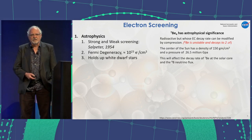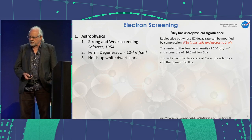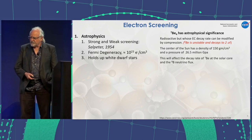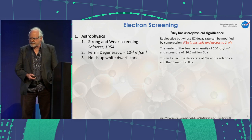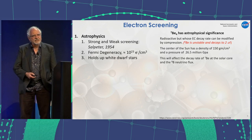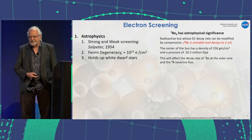Beryllium-7 is interesting because it's radioactive and undergoes electron capture, but you can modify its decay rate by compression. The center of the sun has a density on the order of 150 grams per cc and a pressure of 26.5 million gigapascals, so it's ripe for changing these parameters. As a consequence, that will affect the decay of Beryllium-7 in the sun's core, which in turn affects the boron-8 decay, giving rise to the neutrino flux.